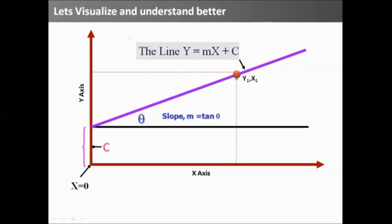As we move from x equal to 0 to x1, the value of y graduates from c to a new value of y, that is y1, which is nothing but y1 equals c plus m times x1. That's how we establish this line.